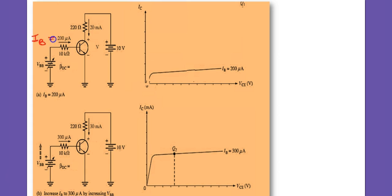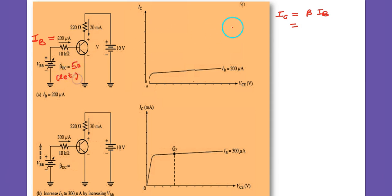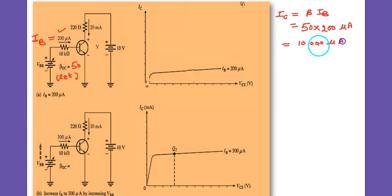Here the base current is 200 microamperes. Let beta equal 50. So IC equals beta times IB, which is 50 into 200 microamperes, giving 10,000 microamperes — that is 10 milliamperes. So the collector current is 10 milliamperes, plotted along the y-axis.